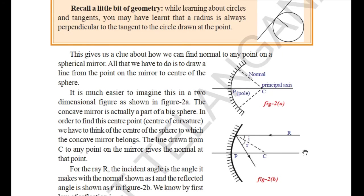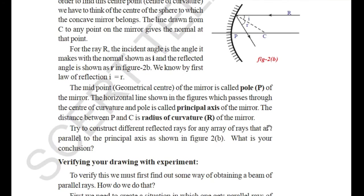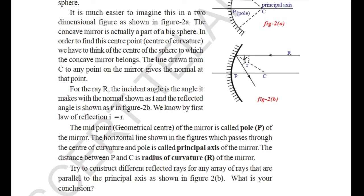Now taking the help of ray diagrams, here is an incident ray parallel to the principal axis. Whenever a ray is parallel to the principal axis, by applying the law of reflection, the ray gets reflected through a point known as the focus. The midpoint of the mirror is known as the pole. The distance between the pole and the center of curvature is the radius of curvature, denoted with R.